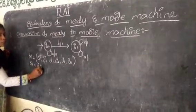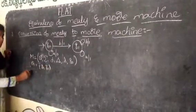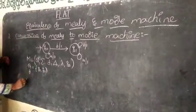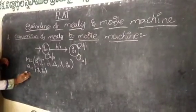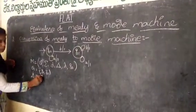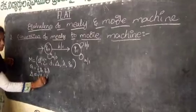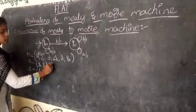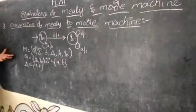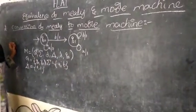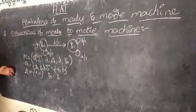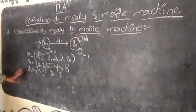Q represents the states, like Q0 and Q1. Delta means the transition function. Lambda means outputs — the outputs are 0 and 1, whereas inputs are A and B. Q0 is the initial state. Lambda is the output function.